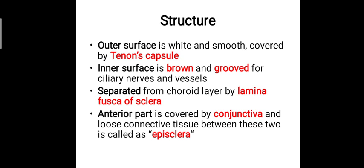The sclera is composed of dense fibrous connective tissue. The outer surface of the sclera is white and smooth, covered by a capsule called Tenon's capsule. The inner surface is brown and grooved for ciliary nerves and vessels, as the ciliary vessels richly supply the choroid layer of the eyeball. Those vessels and nerves passing through form grooves on the inner surface of the sclera.